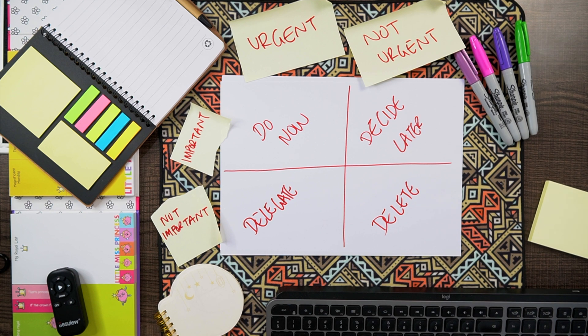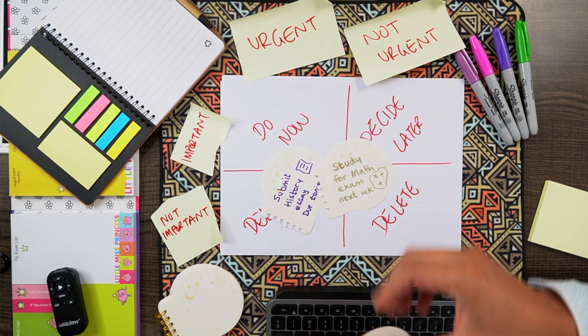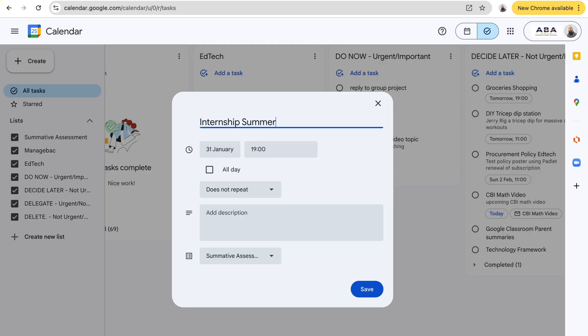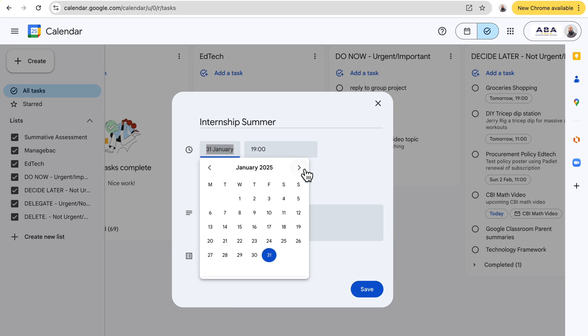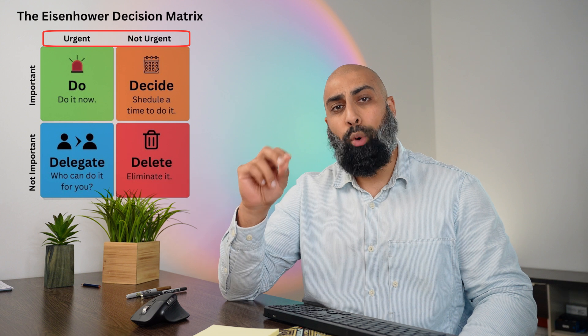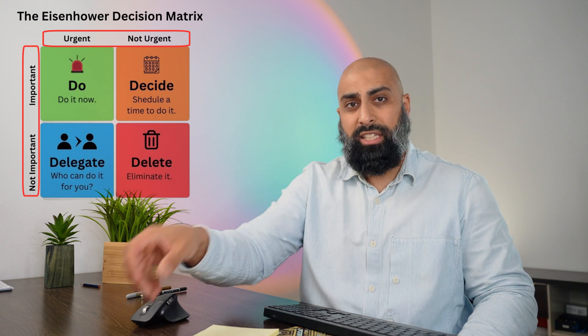Hey everyone, in my last video I showed you how to set up Google Tasks with the Eisenhower Matrix, but today we're going to take it a step further. I'm going to walk you through a real-life example of how you can use this system to stay organized, beat procrastination, and get more done without feeling overwhelmed. Quick refresher: the Eisenhower Matrix helps prioritize tasks based on urgency and importance.